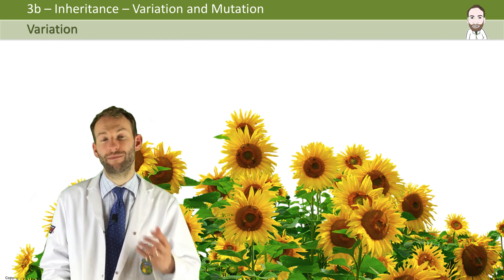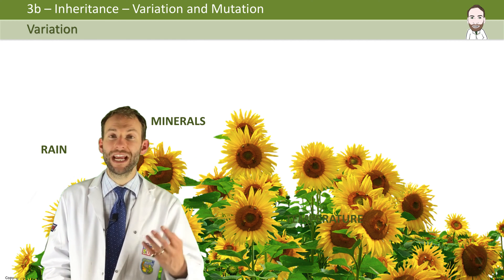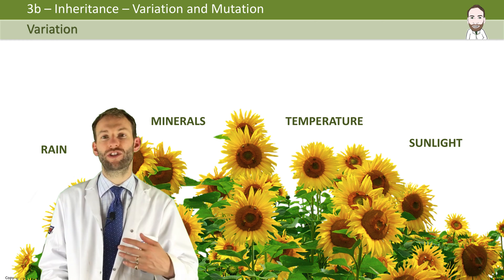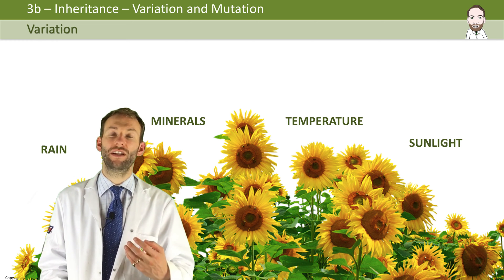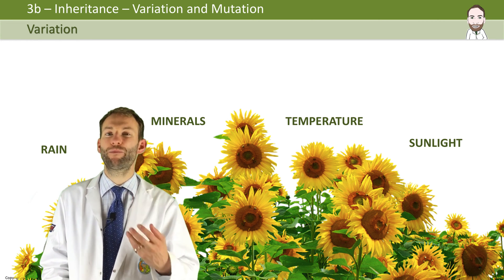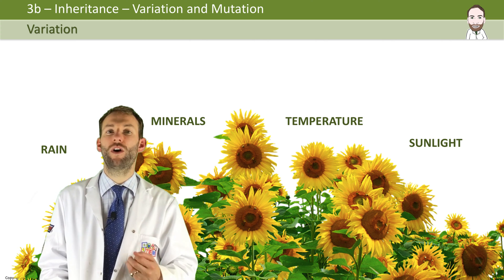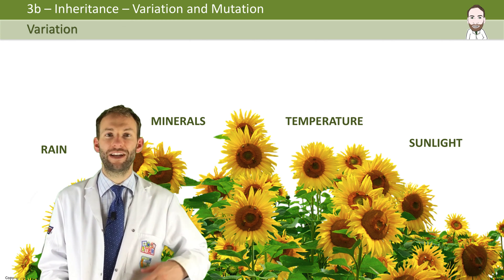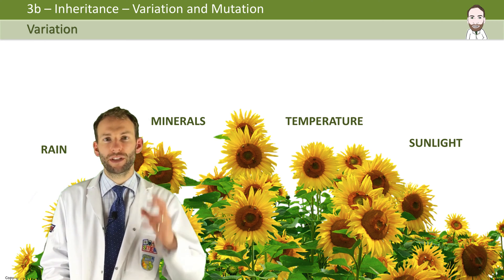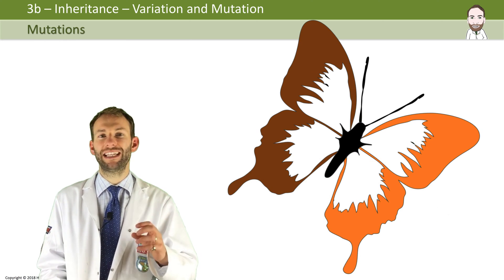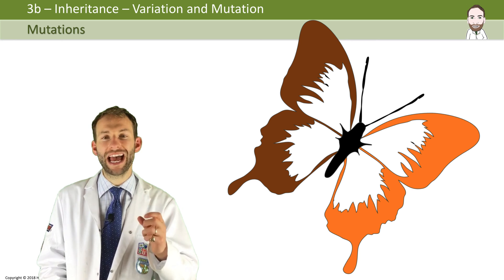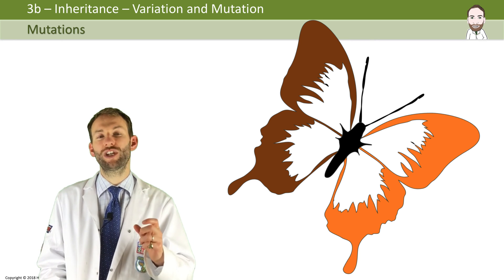Environmental variation has a much greater effect in plants because they're really affected by things like rain, minerals, temperature, and sunlight as to how they grow and develop. So the environment plays a probably bigger role in the variation you see within plants.